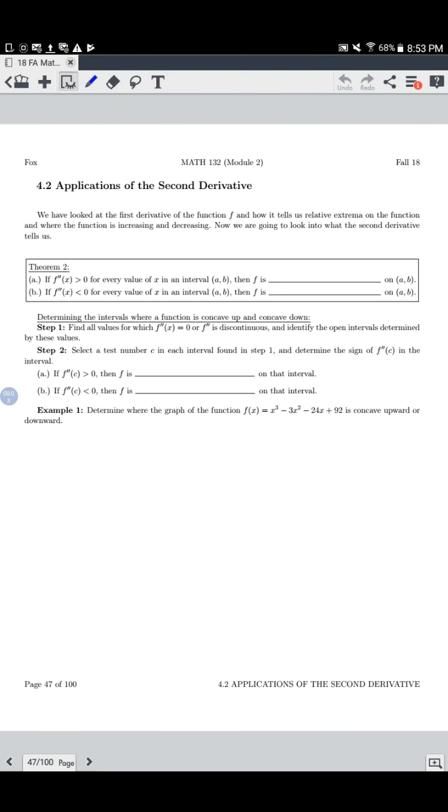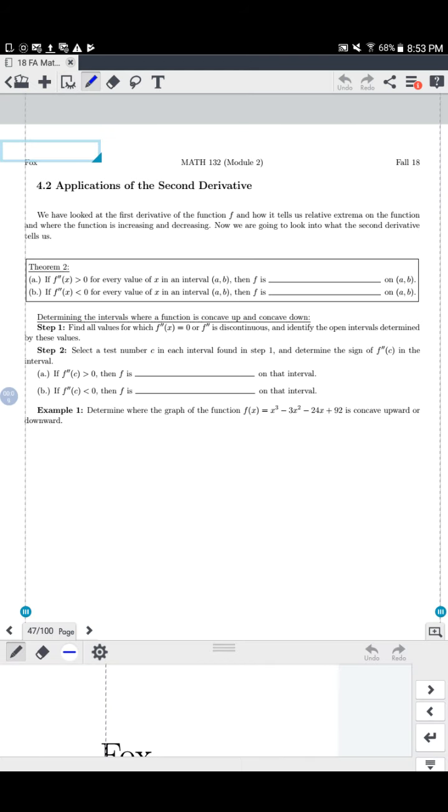Now that we know how to take a second derivative, we want to look at an application of the second derivative. The good news is this looks a lot like the application of the first derivative, finding max and min, but now we call it new pieces of information.